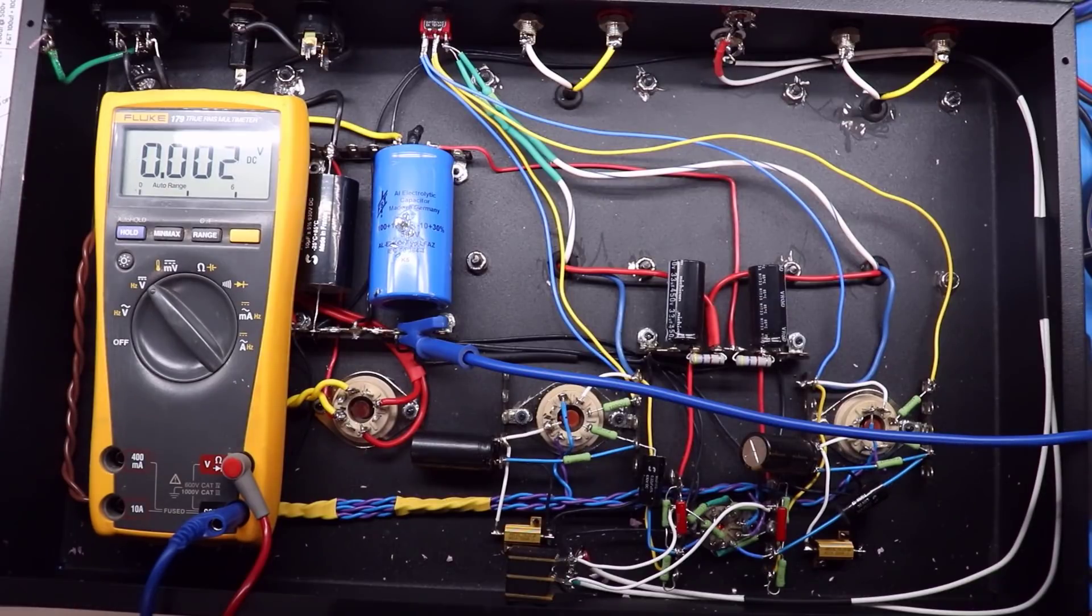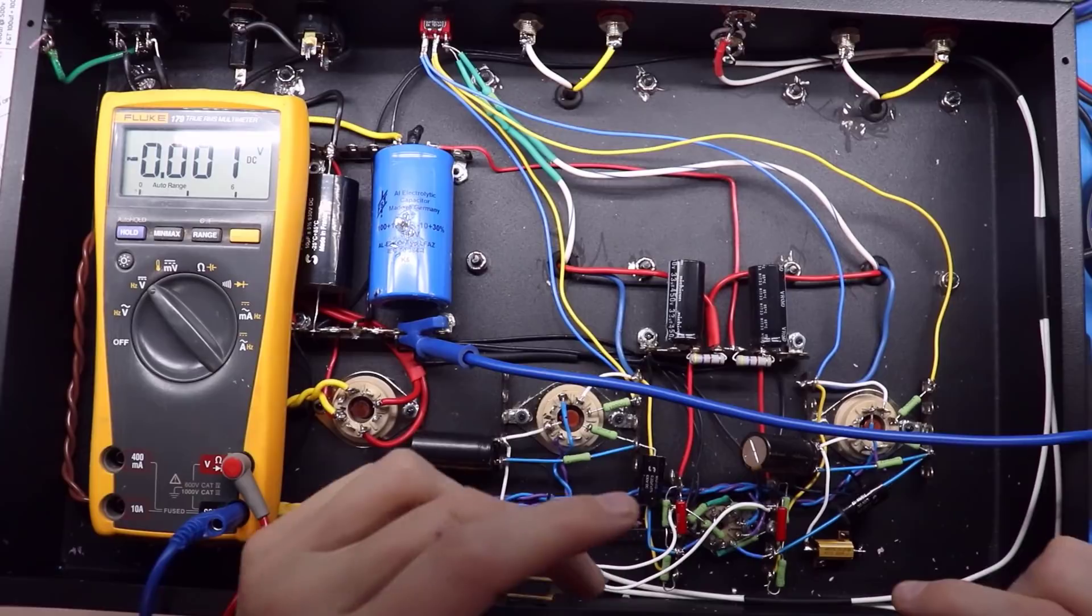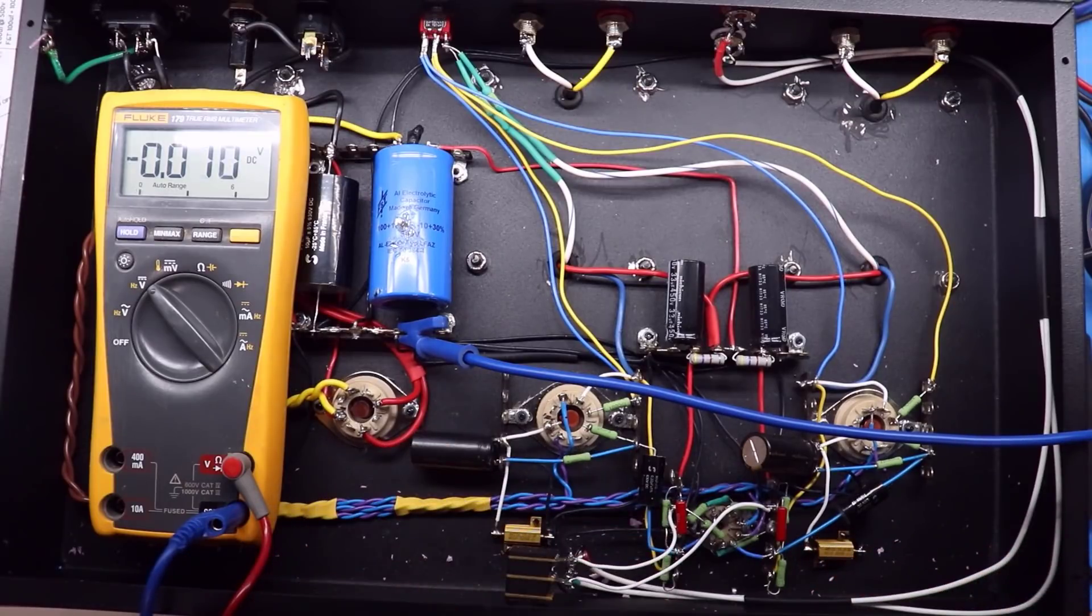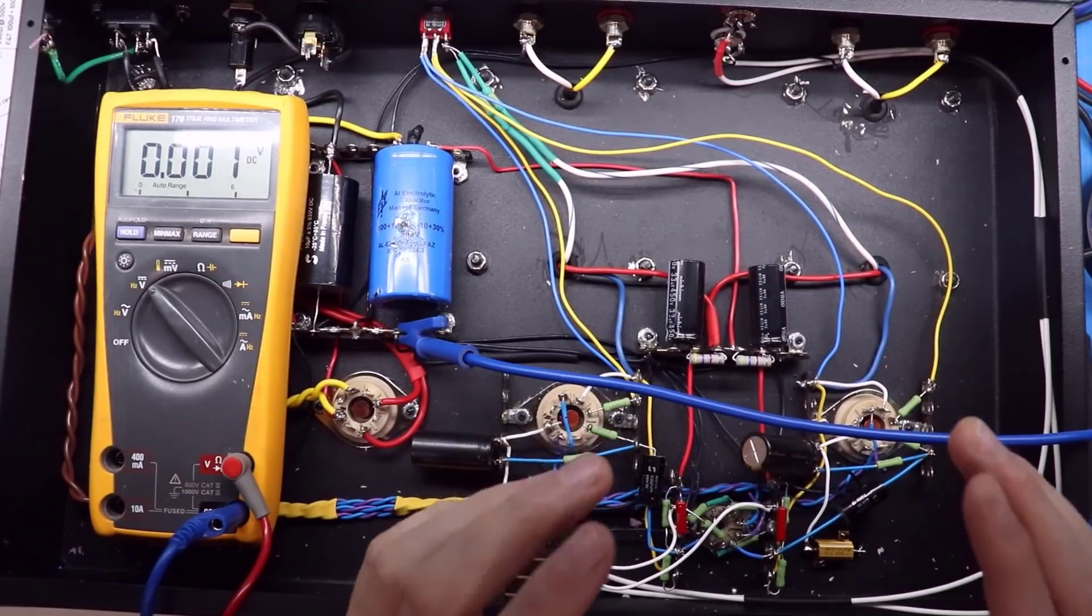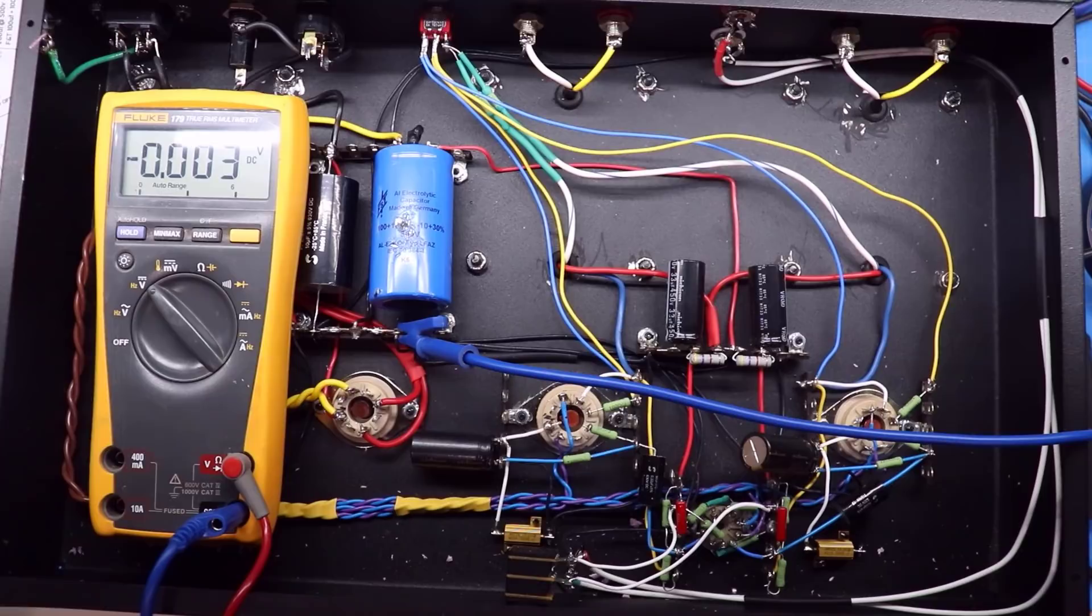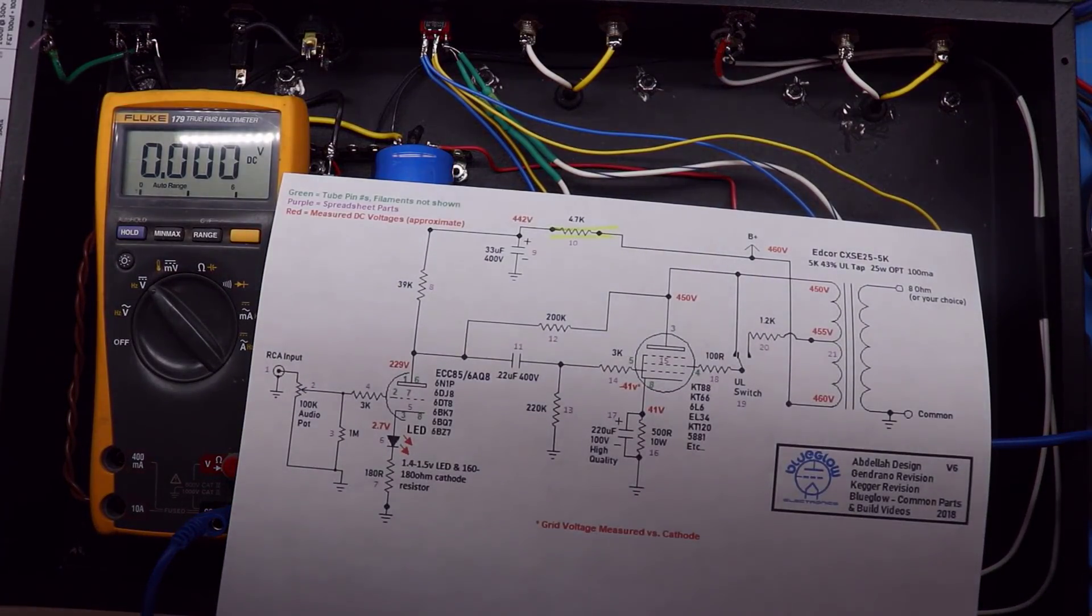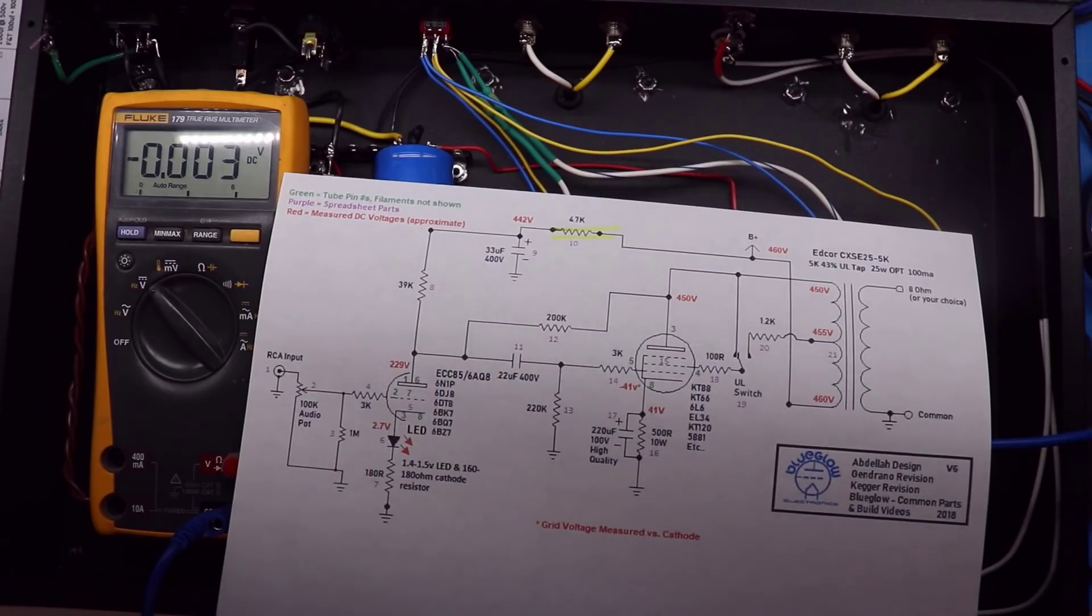Now that kind of stuff is super easy to overlook and you're sitting here looking and you're going, I've got my 200K resistor, I've got my 39K resistor, I've got them wired in. Sometimes you get so close to these amplifiers, you just got to step back and really take a fresh look at it, start checking voltages.